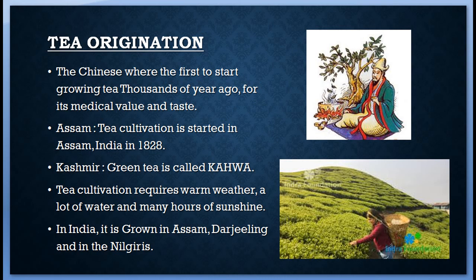Tea cultivation: Tea is prepared in different ways across India. In Kashmir, green tea is made with crushed almonds and is called kahwa. In Ladakh, strong tea is made with green tea, salt, and yak butter. The Chinese were the first to grow tea thousands of years ago for its medicinal value and taste. Later, the Japanese started cultivating tea. Tea cultivation started in Assam, India in 1828. Tea is an evergreen plant which grows at heights of 1000 to 2000 meters.